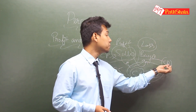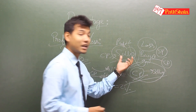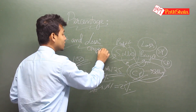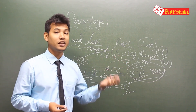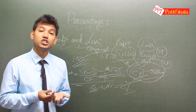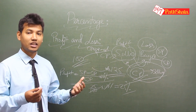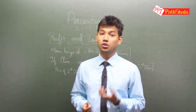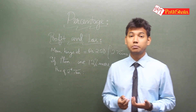If you're talking about the loss caused to the buyer, then the CP will be the selling price given to him by the seller. For the seller, CP is what he originally bought the item for. Please keep in mind the difference between cost price and selling price. Once you understand this, calculations become much easier. Let's now move to some simpler problems first, then raise the difficulty.